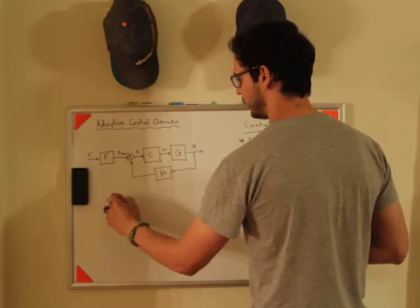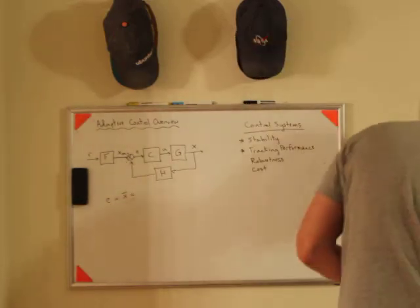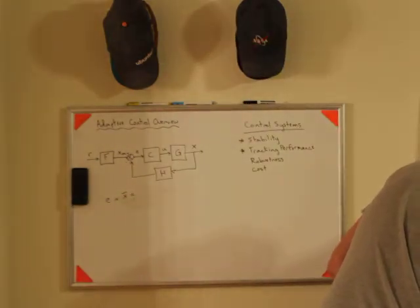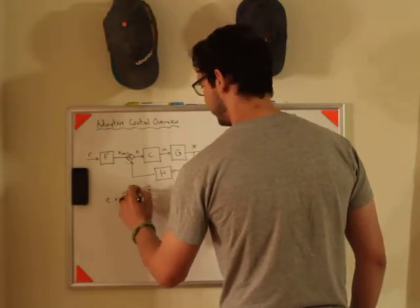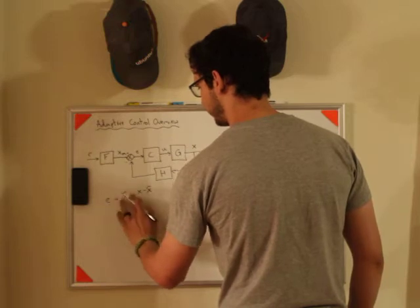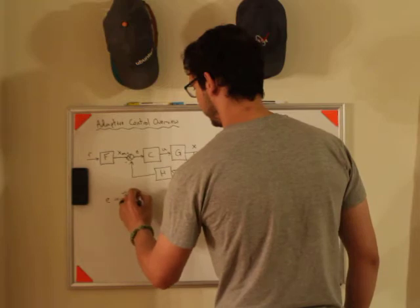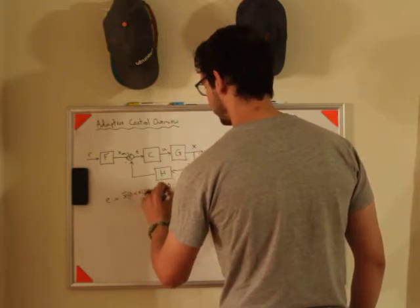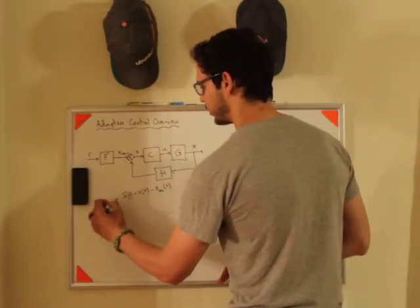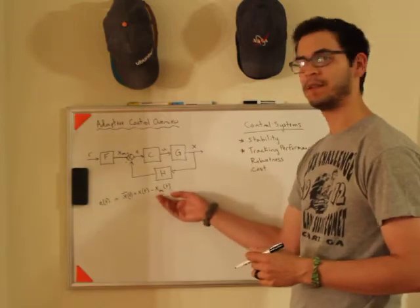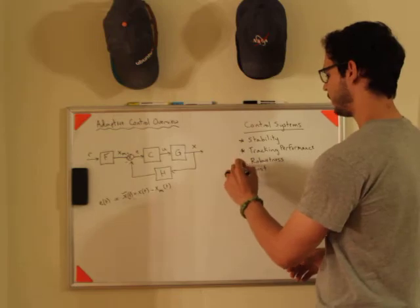You've also ensured that the tracking performance, that is the time response, so if you look at your error signal which I'm also going to call it x tilde, that's the pronunciation they use in the book. It is x minus x model, and if these are functions of time, all right, so x is a function of time minus x model is a function of time. When you're looking at tracking performance, you're looking at this as a function of time, how well does your system track this signal.